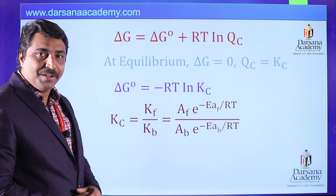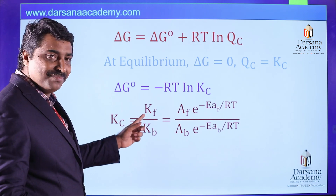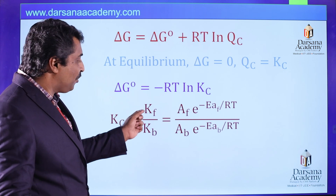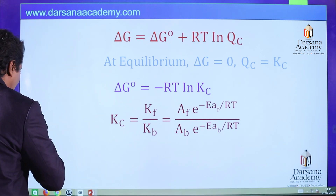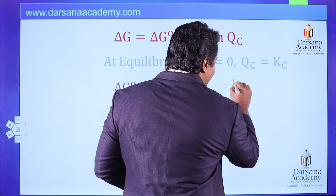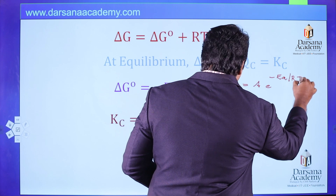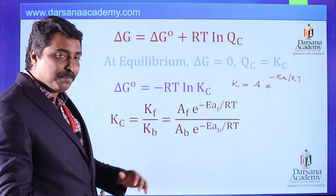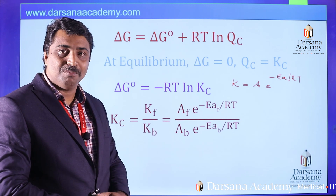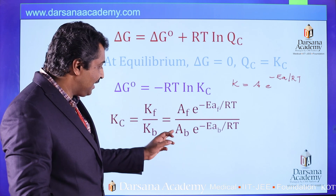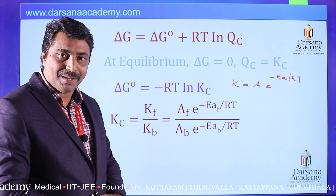The equilibrium constant KC is the ratio of the rate constant of the forward reaction to that of the backward reaction. According to the Arrhenius equation, the rate constant k equals A times e raised to minus Ea divided by RT. So the rate constant of the forward reaction is AF times e raised to minus EAF divided by RT, and the backward reaction rate constant is AB times e raised to minus EAB divided by RT.